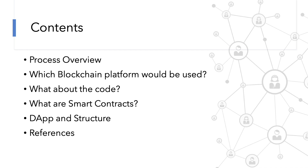A blockchain is literally a chain of blocks. It is a growing list of records called blocks that are linked using cryptography. Each block contains data which is encrypted with a cryptographic hash of the previous block. That's just the overview of what blockchain is.